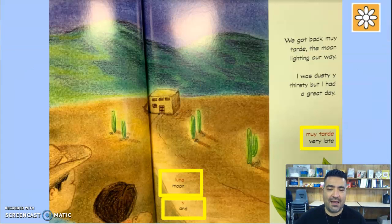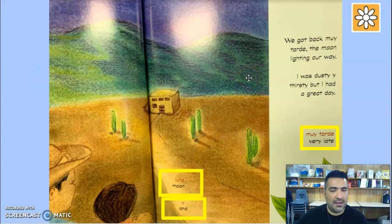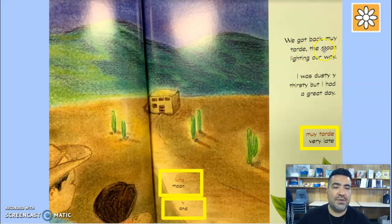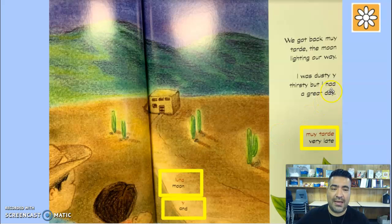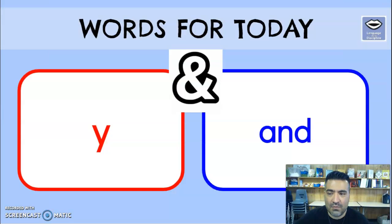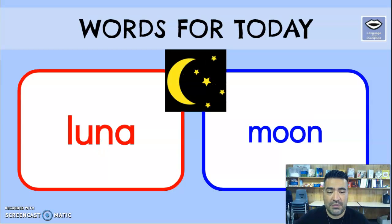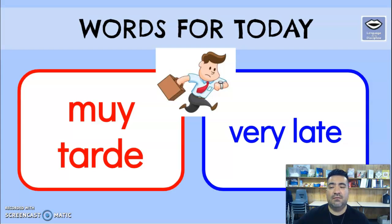Let's get right into the story and see how they use these last couple of words and phrases. Lucas just asked grandpa if he could take the beans back home. The story says: we got back 'muy tarde' — very late. The moon lighting our way. I was dusty and thirsty, but I had a great day. And there's the moon, or 'luna.' You see there's the word 'E,' the conjunction 'E' — he was dusty 'E' thirsty. So again, there's 'E' which means 'and,' 'luna' which means 'moon,' and 'muy tarde' which means 'very late.'